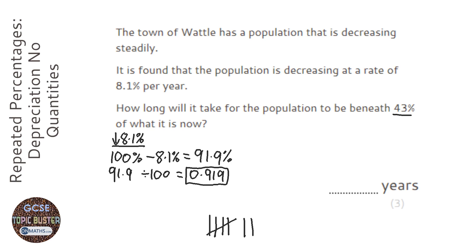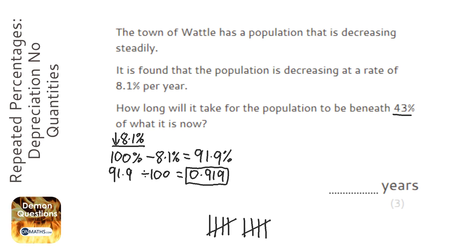Continuing: 0.55, then 0.50, then 0.46 — getting very close. One more time and we get 0.429, so it's taken 10 years.